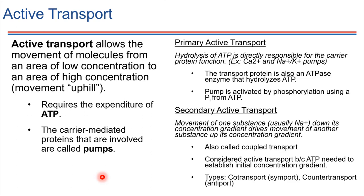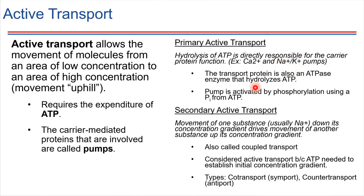There are a couple of different types of active transport: primary versus secondary. In the case of primary active transport, ATP is hydrolyzed directly, and that causes the protein to do its job. Some examples include sodium-potassium pumps, which we'll be seeing a lot later on in the course. Using an ATP molecule is what activates the pump in this case.